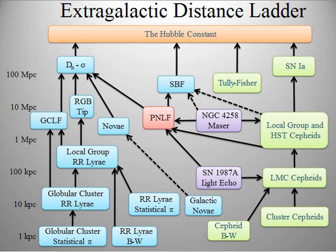Direct distance measurements are based upon the astronomical unit, which is the distance between the Earth and the Sun. Kepler's laws provide precise ratios of the sizes of the orbits of objects orbiting the Sun, but provide no measurement of the overall scale of the orbit system. Radar is used to measure the distance between the orbits of the Earth and of a second body. From that measurement and the ratio of the two orbit sizes, the size of Earth's orbit is calculated. The Earth's orbit is known with an absolute precision of a few meters and a relative precision of a few 1×10⁻¹¹.